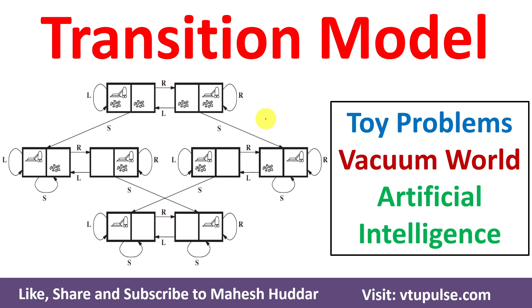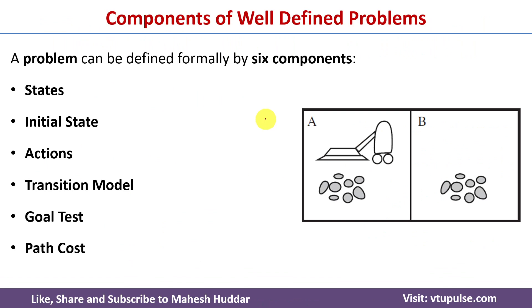Welcome back. In this video I will discuss how to draw a transition model for the vacuum world example in artificial intelligence. In the previous video I already discussed how to define a vacuum world example properly in artificial intelligence using six different components — the link for that video is given in the description below.